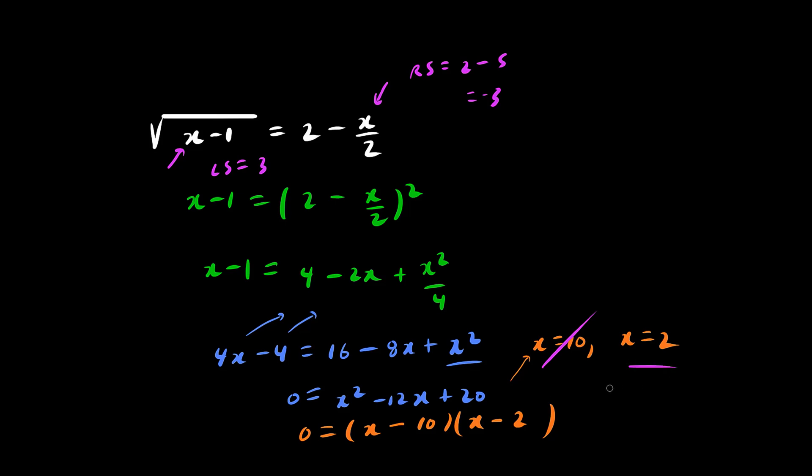Now let's try x equals 2. Left side is square root of 2 minus 1, so left side equals the square root of 1, which is 1. And the right side would now be 2 minus 2 over 2. 2 minus 1 is 1. So left side equals right side, so indeed x equals 2 is valid.